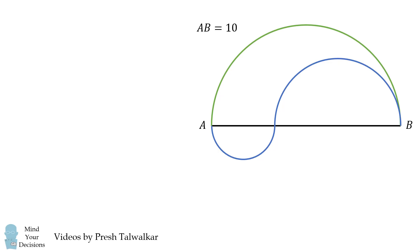So how can we solve this problem? Let's calculate the length of each curve. First, let's calculate the length of the green curve. Recall that the circumference of a circle is equal to its diameter times pi.